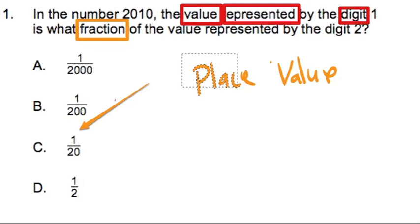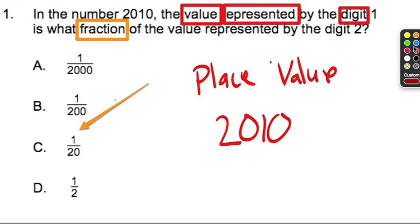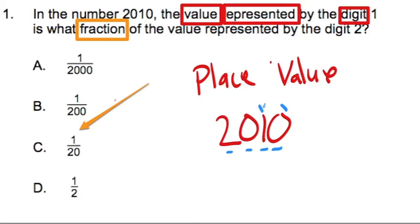If we think about this question in terms of place value, I think we're going to be in a really good spot. In terms of place value, if we look at the number 2010 and examine the place value of the digits — 0, 1, 0, 2 — the first digit is in the ones column, the second digit is in the tens column, the third is in the hundreds, and the fourth is in the thousands.